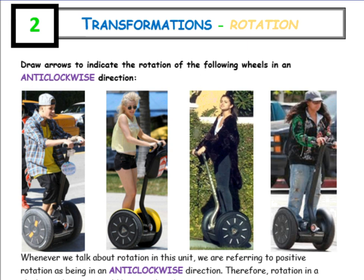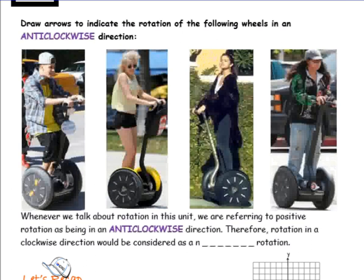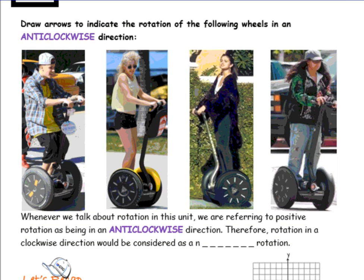Lesson on transformations. The particular type of transformation we're going to look at today are rotations. First of all, draw arrows on these diagrams of celebrities on segways to indicate the rotation of the wheels in an anti-clockwise direction, just to get you into the hang of the difference between clockwise and anti-clockwise. Draw an arrow around the segway wheels showing an anti-clockwise direction.